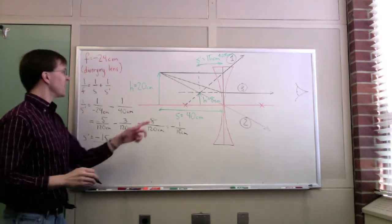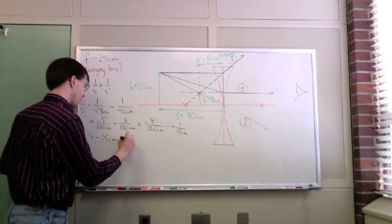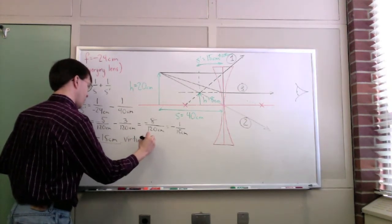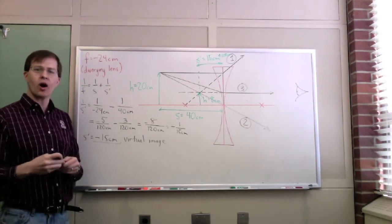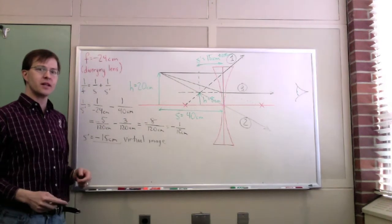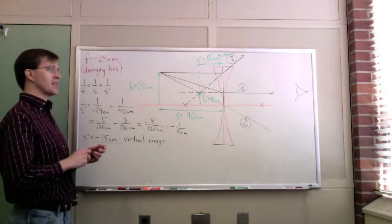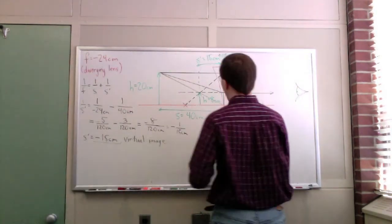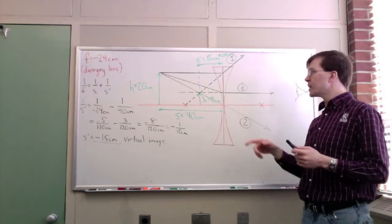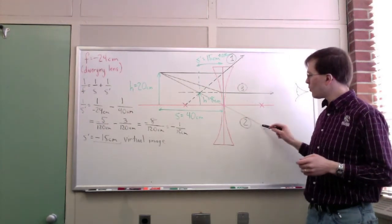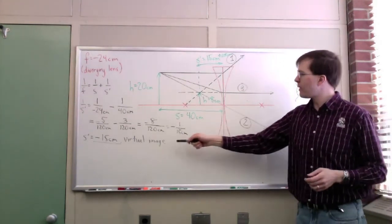The result of −15 centimeters matches my drawing very nicely. The minus sign means this is a virtual image — the image is behind the lens on the incoming side. That's exactly what we expect: you'll essentially always get virtual images with diverging lenses, because it takes very unusual circumstances to produce a real image. In this case, ray two actually passed through that image point, but the other rays did not — they only appear to.